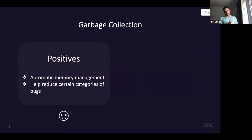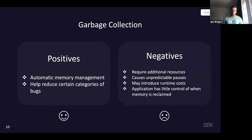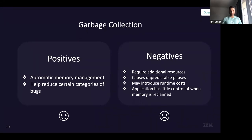Some advantages of a garbage collector: it's automatic memory management, which unburdens the developer from manually allocating memory. It helps reduce certain categories of bugs like dangling pointers and double frees. On the other hand, the negatives include requiring additional CPU cycles and memory, causing unpredictable pauses — known as stop-the-world pauses — introducing runtime costs, and the application has little control over when memory is reclaimed.